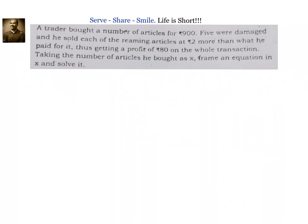We have been given that a trader bought a number of articles for 900 rupees. We don't know how many there are, but we were asked to take it as x. So x articles cost him 900 rupees. Out of them, 5 were damaged, so he was able to sell only x minus 5. To get a profit, for each article he increased the price by 2 rupees. So the CP of each article is 900 divided by x, and the SP of each article is 900 by x plus 2.